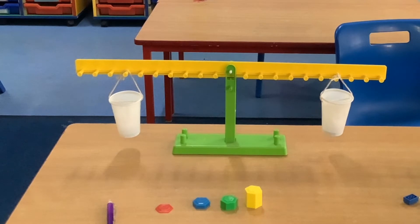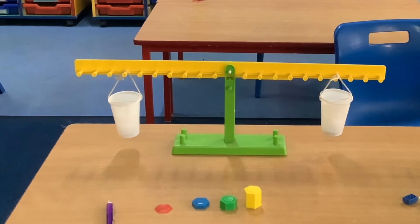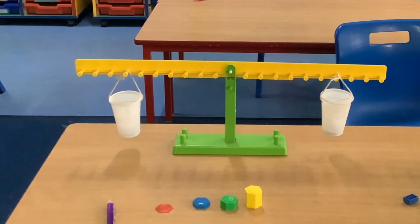This is a balancing scale. What you can do is if you put one object on one side, you can work out how much it weighs by balancing it out so the line, the yellow line, comes back to this position where it is flat.